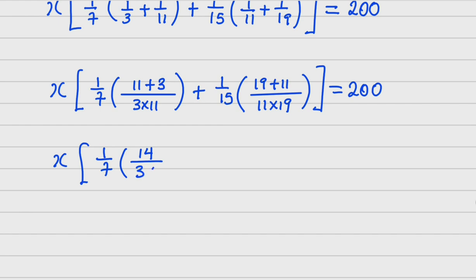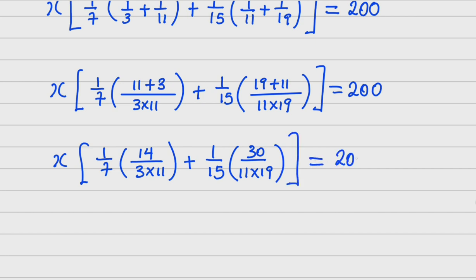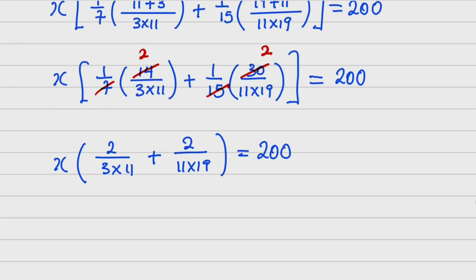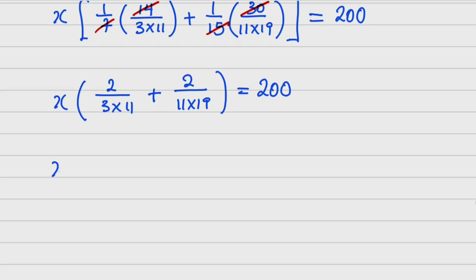So now I have x times: 1/7 × 14/(3×11) plus 1/15 × 30/(11×19), equals 200. The 7 divides into 14 giving 2, and 15 divides into 30 giving 2. So I now have x times (2/(3×11) + 2/(11×19)) equals 200.